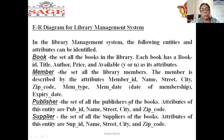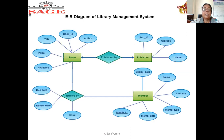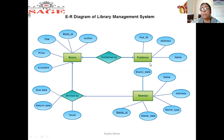The 'Supplier' entity, who supplies the book, also has supplier ID, name, and other attributes. Now let's look at the ER diagram of the library management system. This is the ER diagram of the library management system. How many entities are there? There are three entities: book, publisher, and member.